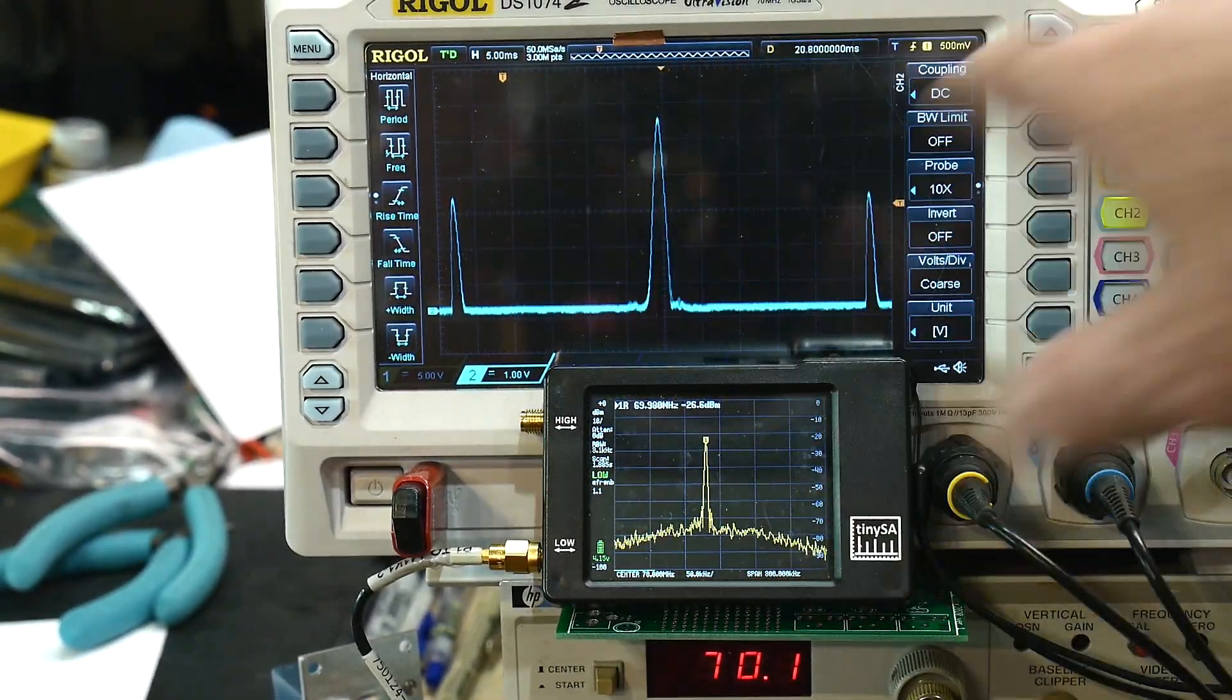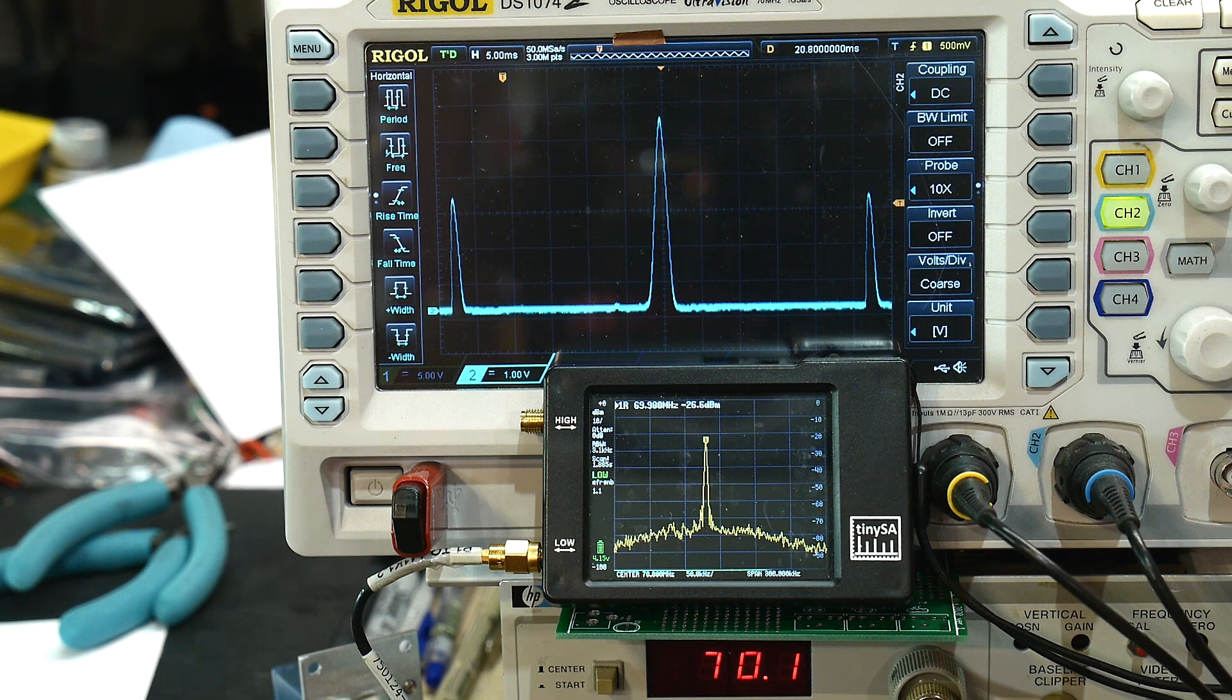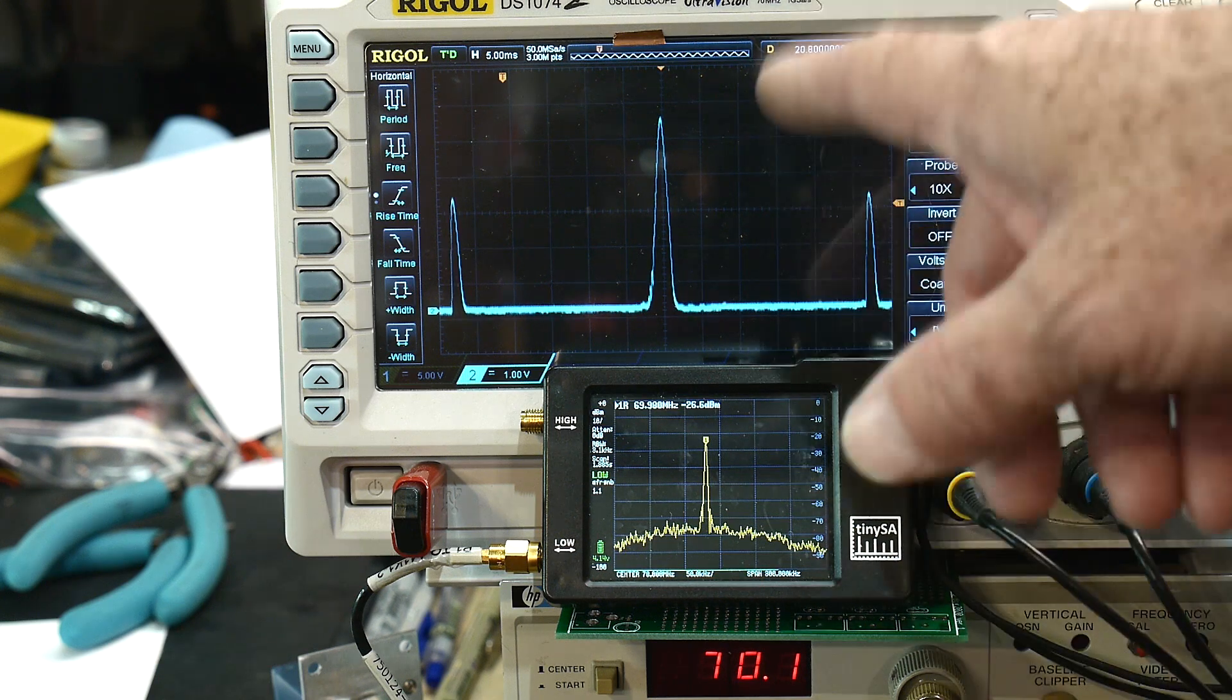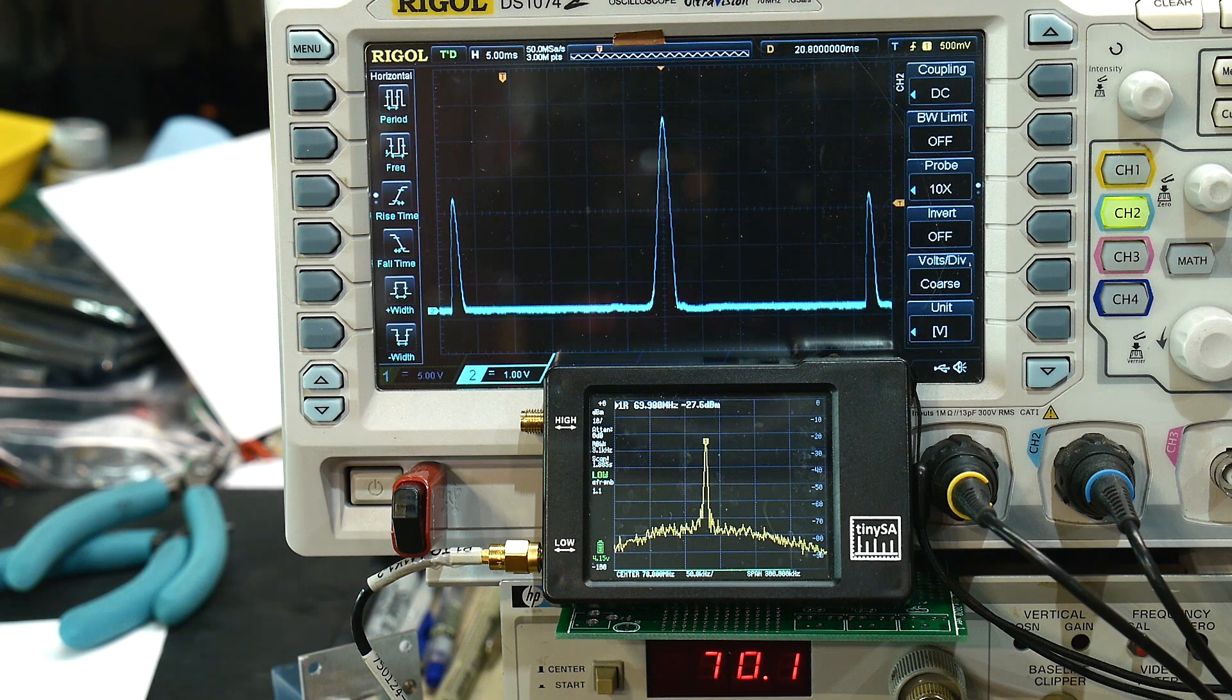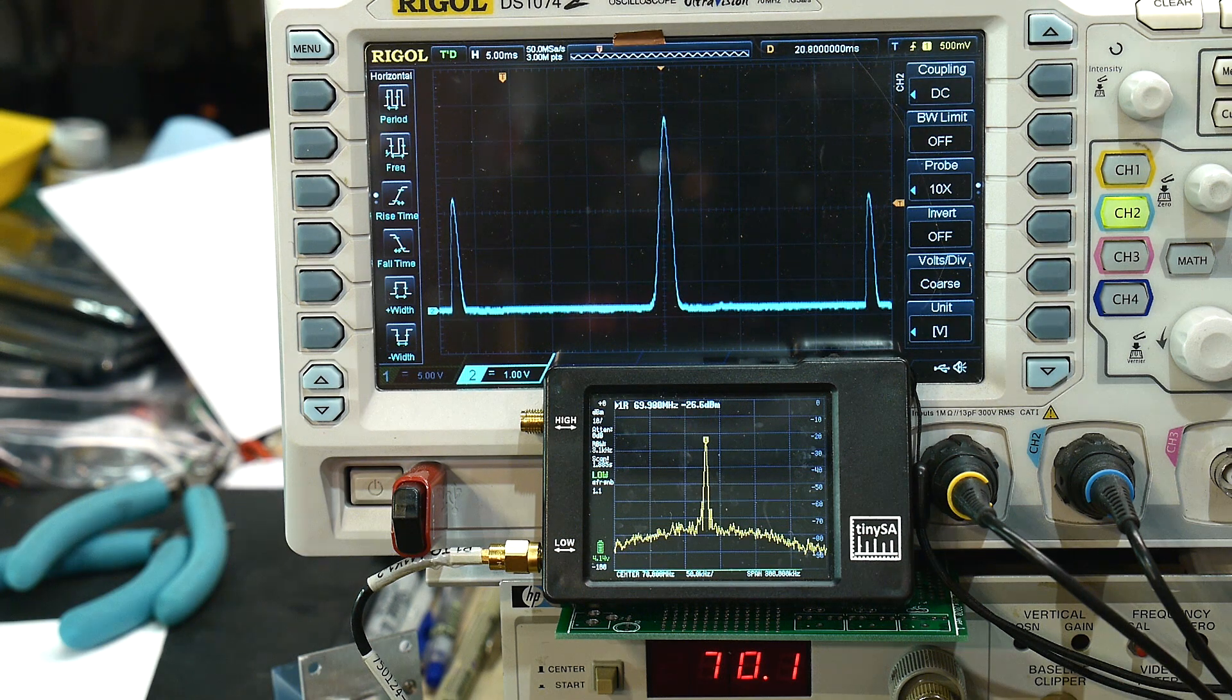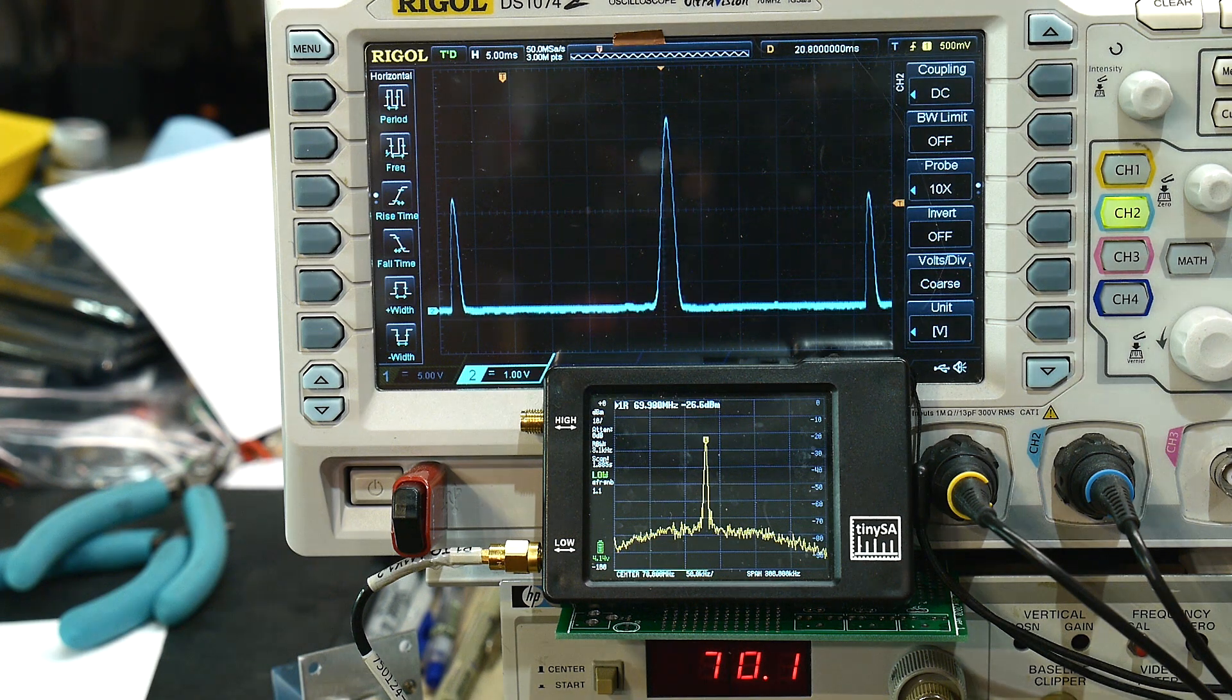So here's the display done on an oscilloscope. I don't have the mainframe plug-in for the 8558, so I'm just using the XY output to the scope here. I have a 70 megahertz carrier and we can see the levels here.